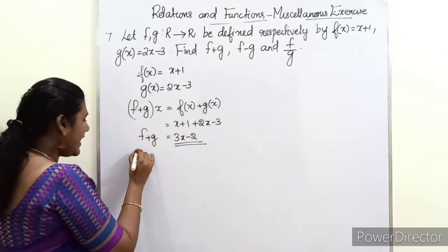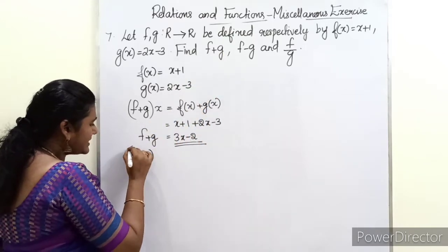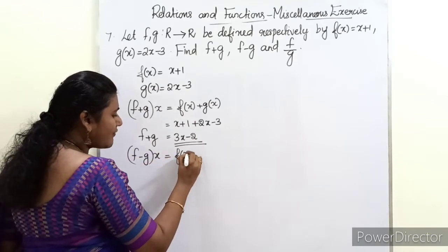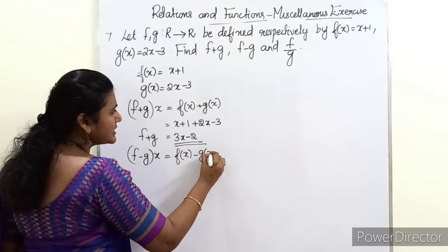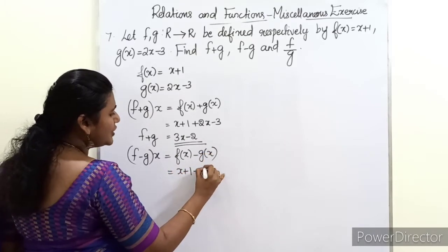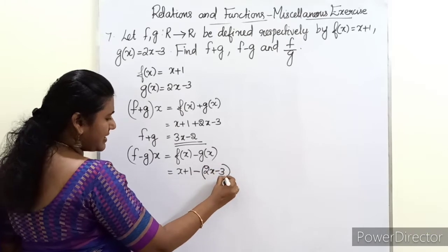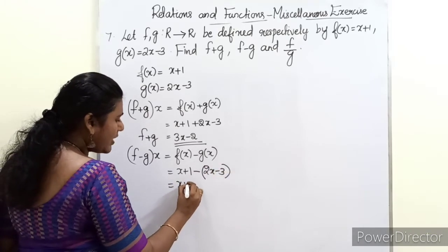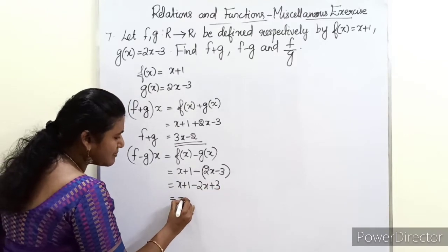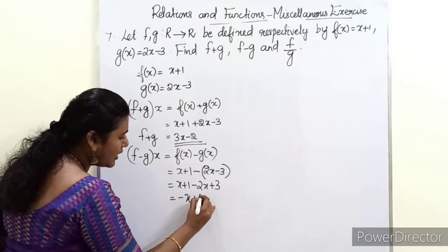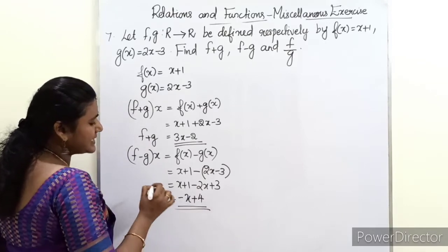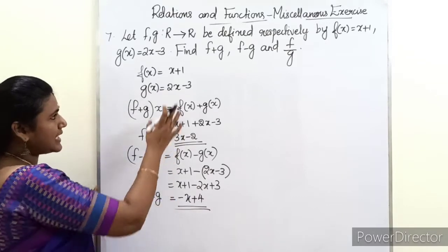Next is f - g of x, the difference of two real functions. This is defined as f(x) - g(x) = (x + 1) - (2x - 3) = x + 1 - 2x + 3. Simplifying, we get -x + 4. So f - g of x = -x + 4. The second part is done.